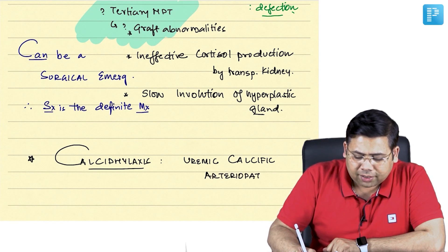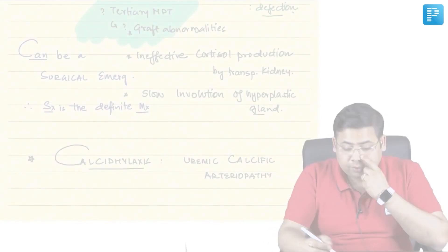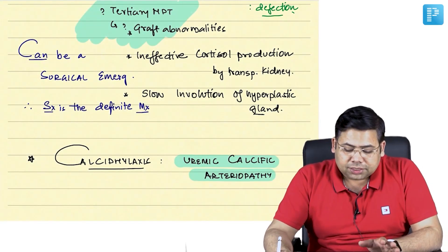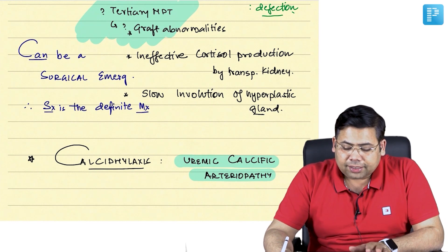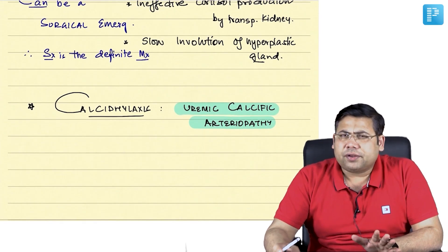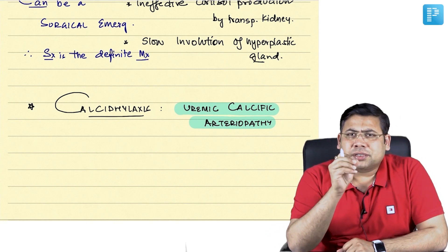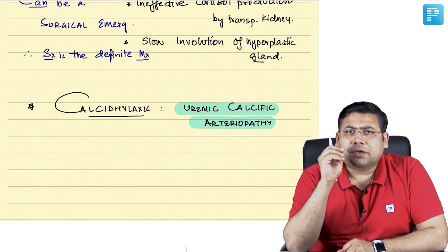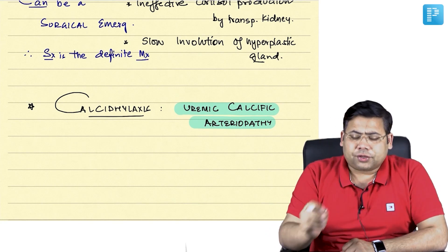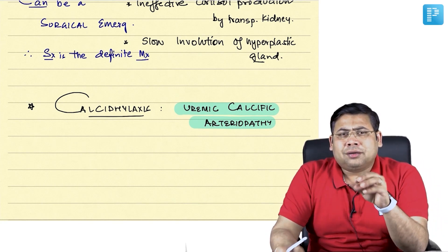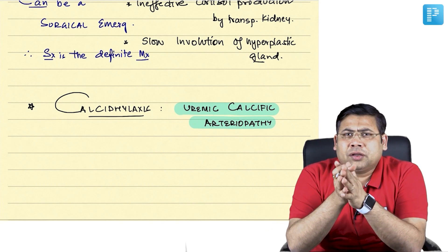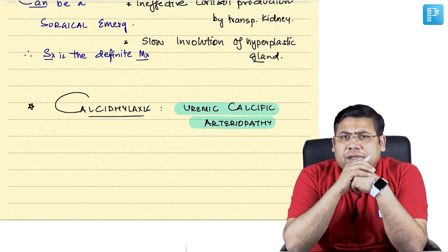So uremic calcific arteriopathy, what is the basic concept of this? This is very simple and straightforward. It is dissemination of calcium or disseminated calcification in the vascular system associated with skin necrosis.